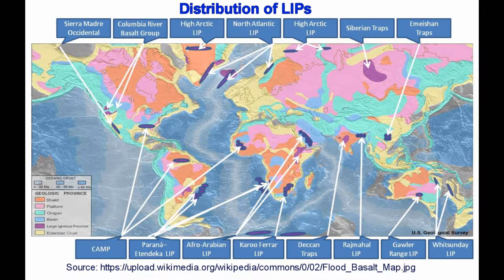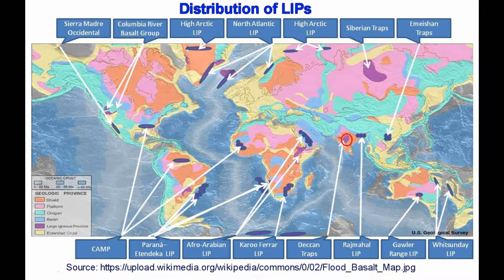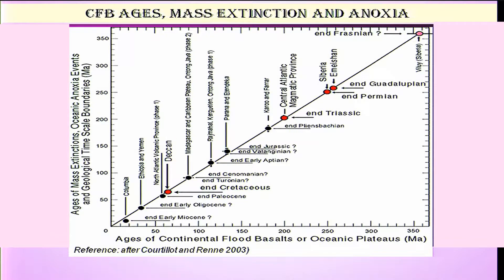Let me introduce where Deccan volcanism stands. When we talk about large igneous provinces, amongst several others like the Siberian traps in Siberia, the Keweenawan traps in the US, and Deccan traps in India, this is perhaps the most interesting event in geological history because it is at the Cretaceous-Tertiary boundary. The Siberian traps, Keweenawan traps, and other large igneous provinces are not at the Cretaceous-Tertiary boundary — this is a very important aspect.